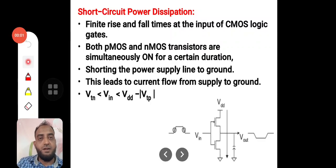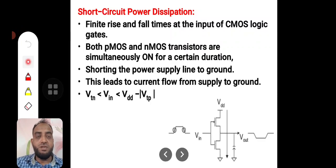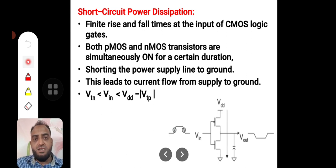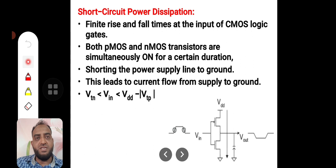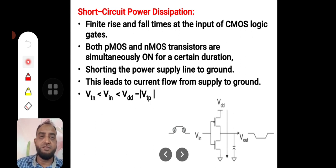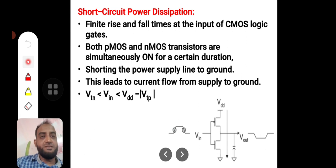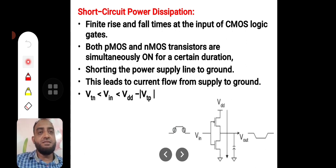Hello, welcome back. In this lecture we will be discussing short circuit power dissipation. Short circuit power dissipation is the first kind of dynamic power dissipation, which takes place because of the finite fall time as well as rise time of the input at the CMOS logic gates.